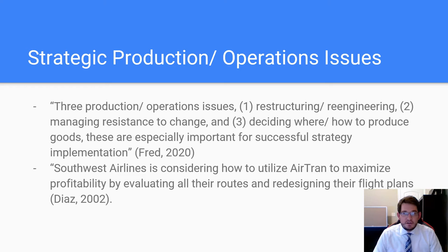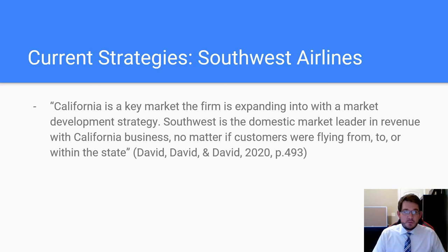Southwest Airlines is looking into using AirTran to help maximize its profitability. The AirTran strategy will be used to create the most efficient routes and help redesign their flight paths. In the long run, this will help Southwest become more profitable because they will be able to offer more flights at more frequent times. Southwest is expanding flights into California, which is the key market for their market development strategy. Southwest is the domestic market leader in revenue with California businesses, no matter if customers were flying from, to, or within the state.